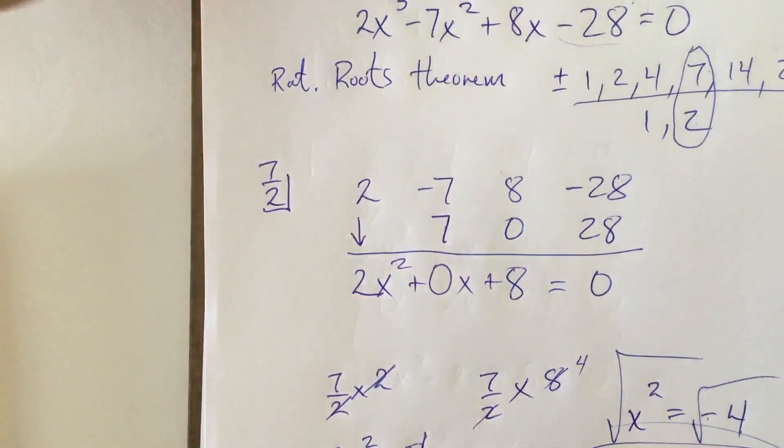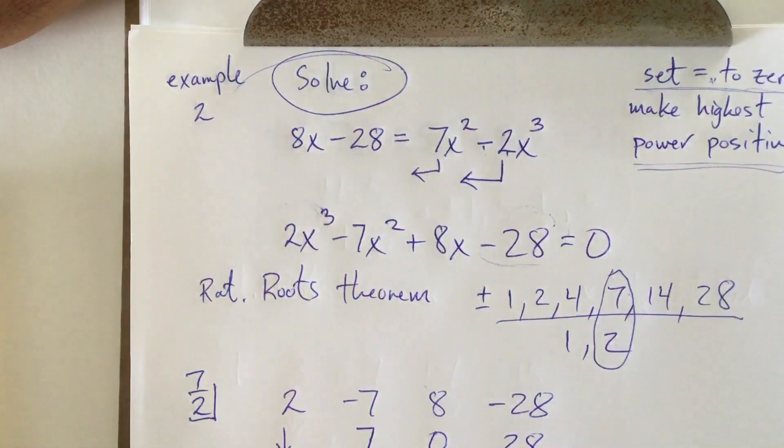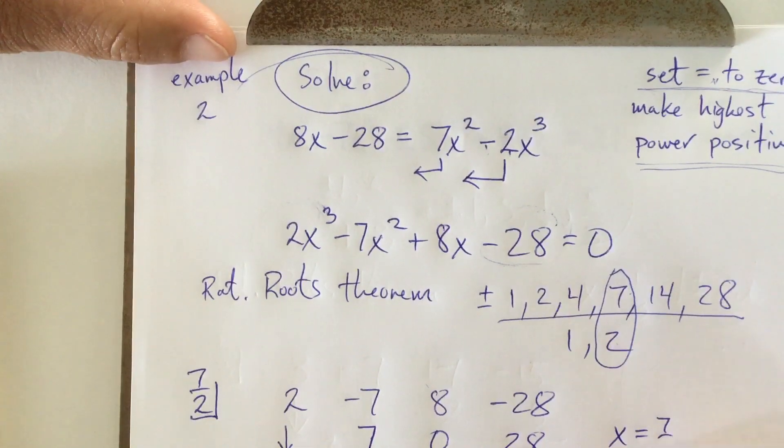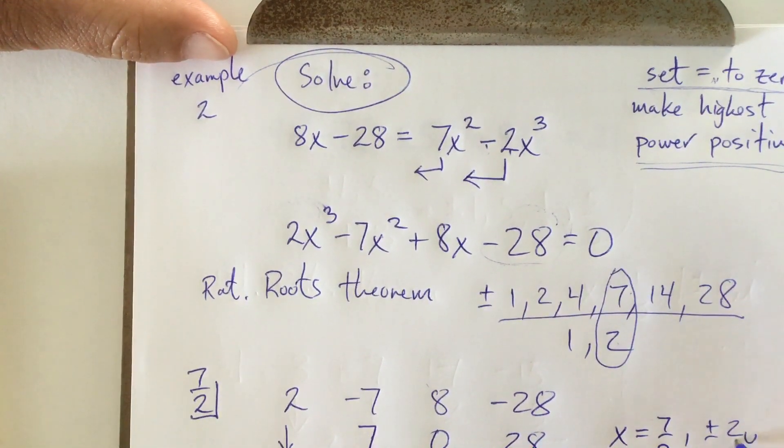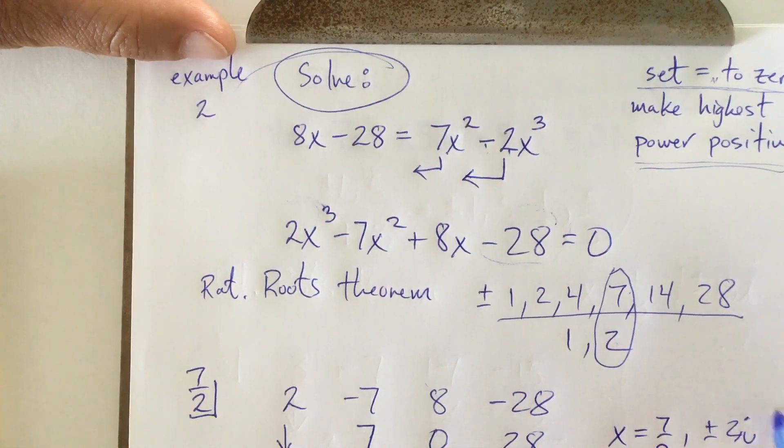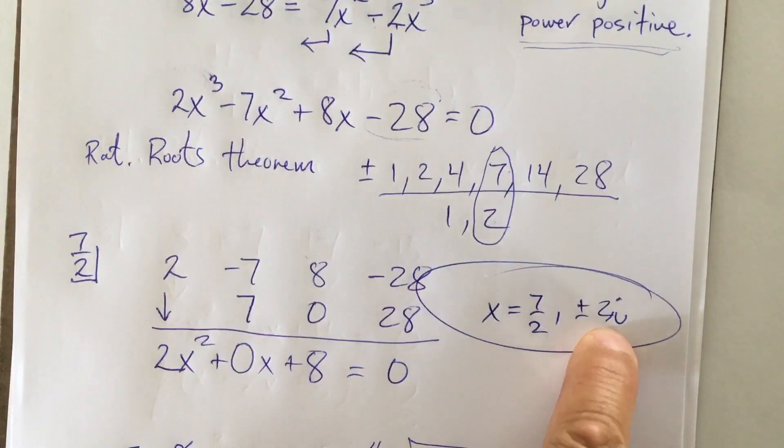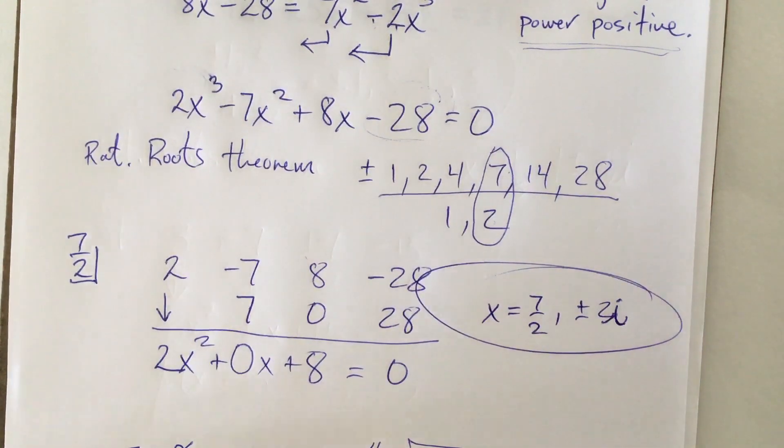So that's one answer. Two answers. Three answers total. So the solve, it says solve. I just did. I get X equals seven halves and plus or minus two I. That is the worst looking I, but you know what I meant. Okay. Oh, and I, you can't even see what I'm writing. That is the worst looking I. I don't know what happened to that thing. There. Even that looks crappy. We got one more example.